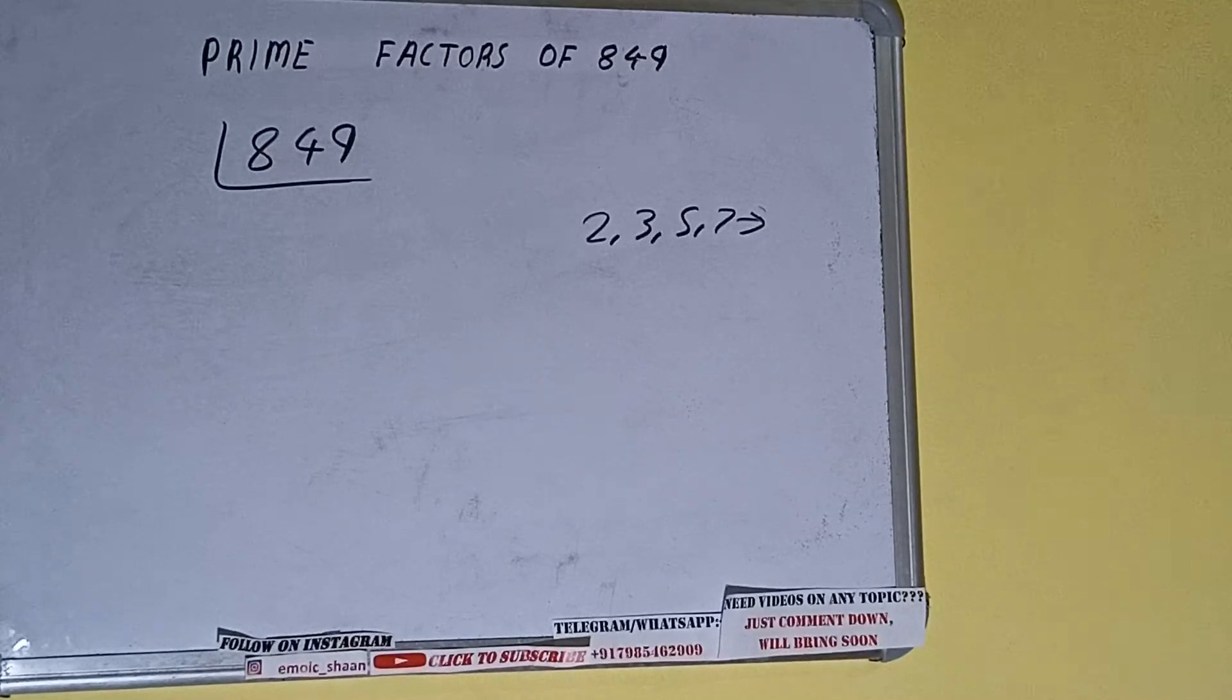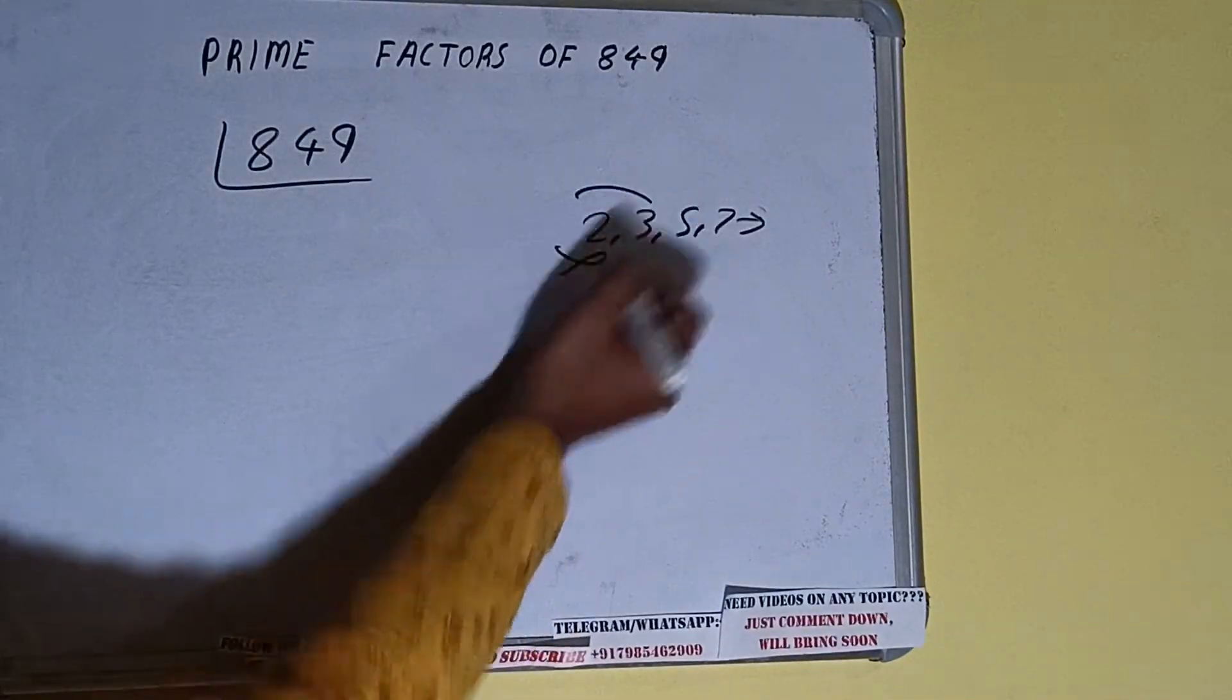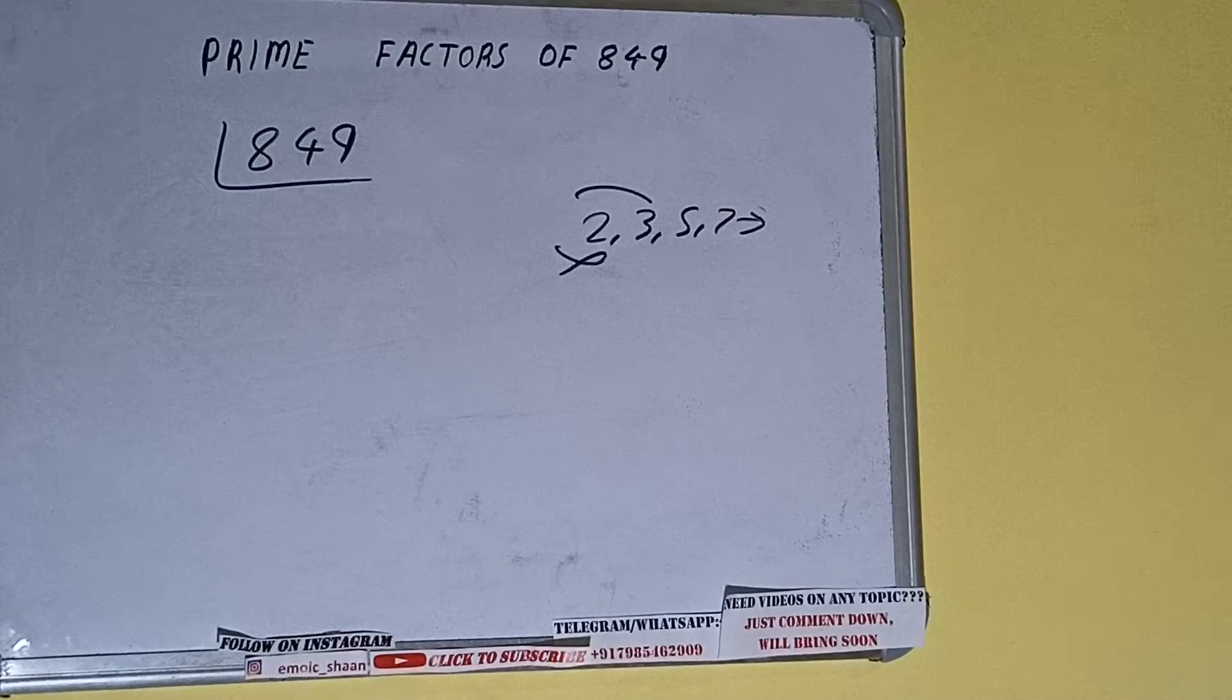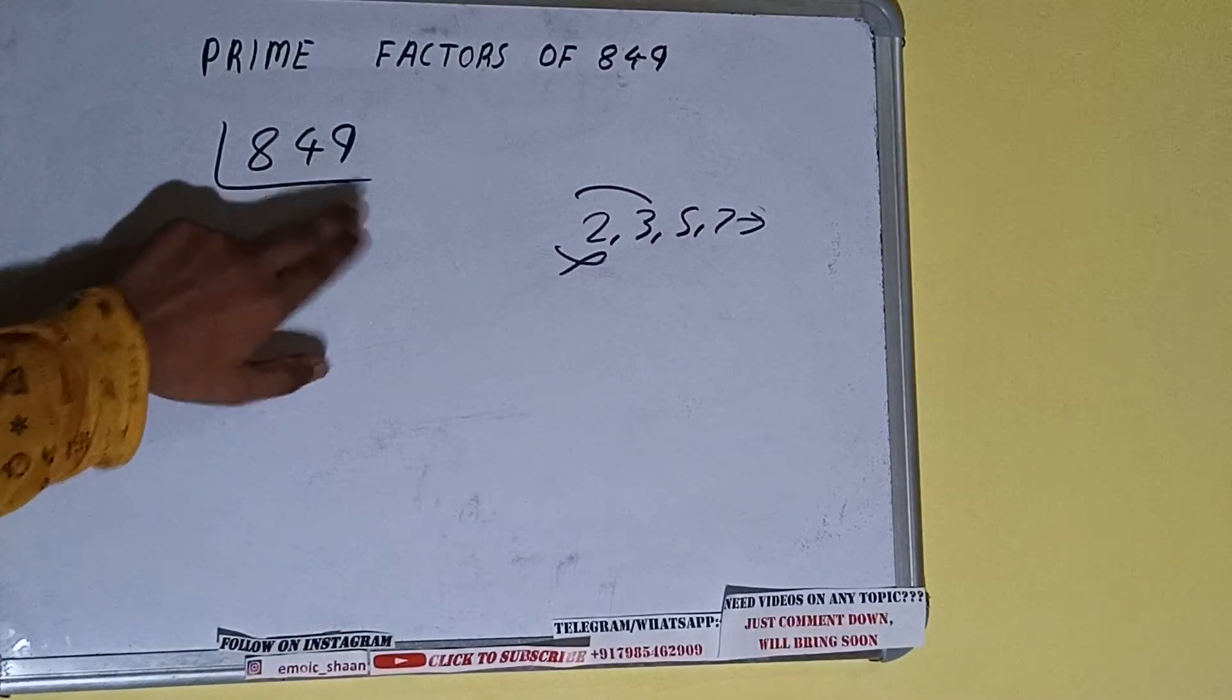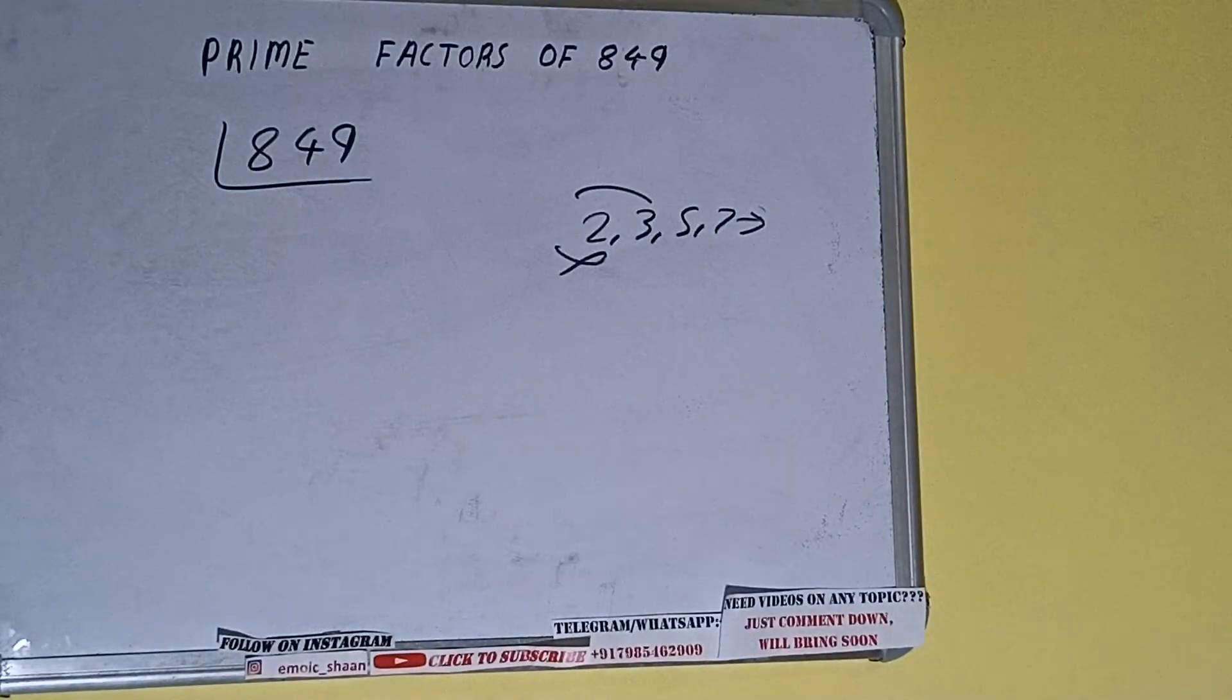So we'll check with the next lowest prime number, that is 3. 8 plus 4 plus 9 is 21, and 2 plus 1 is 3. It is divisible by 3.